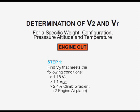The climb gradient is then measured by a simple formula to determine whether the 2.4% climb gradient requirement is met. If not, the climb is repeated at a faster speed, until the climb gradient is at least 2.4%.